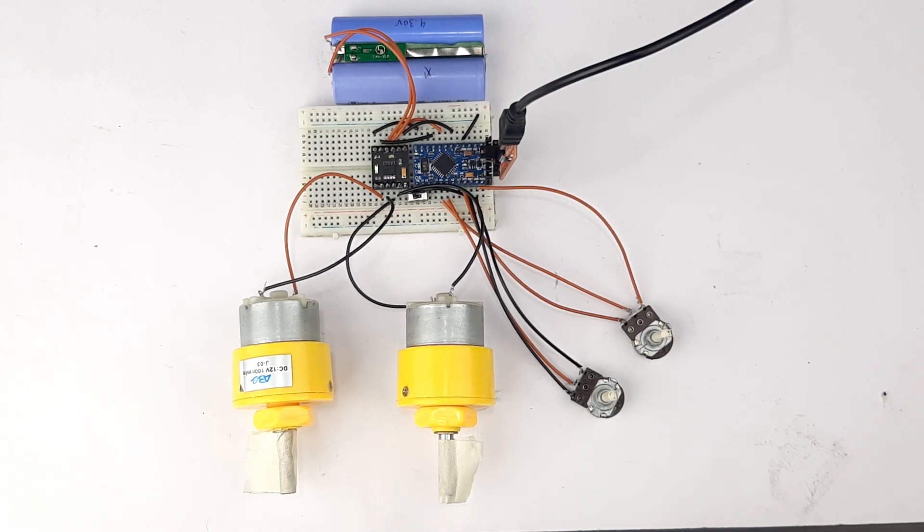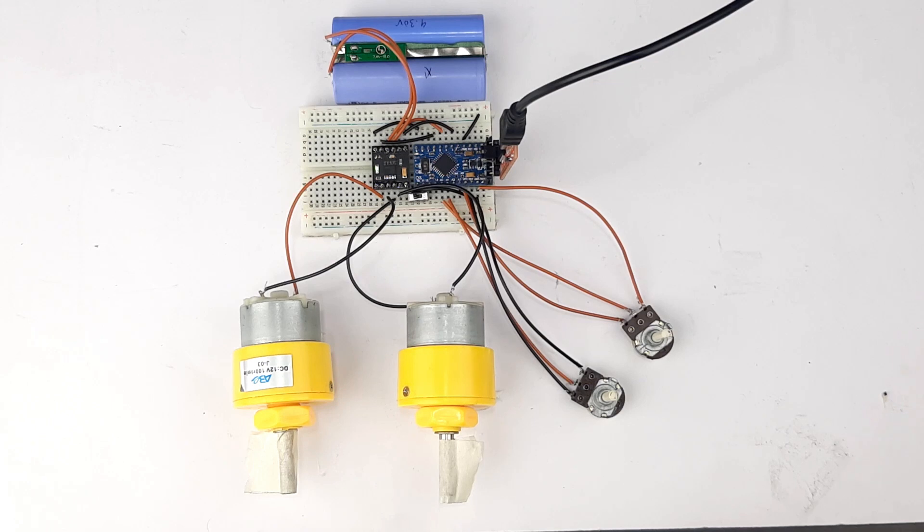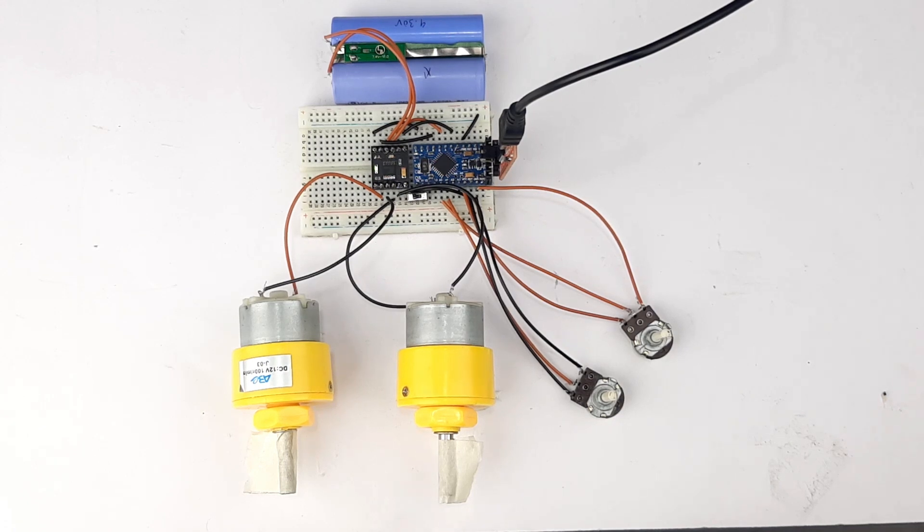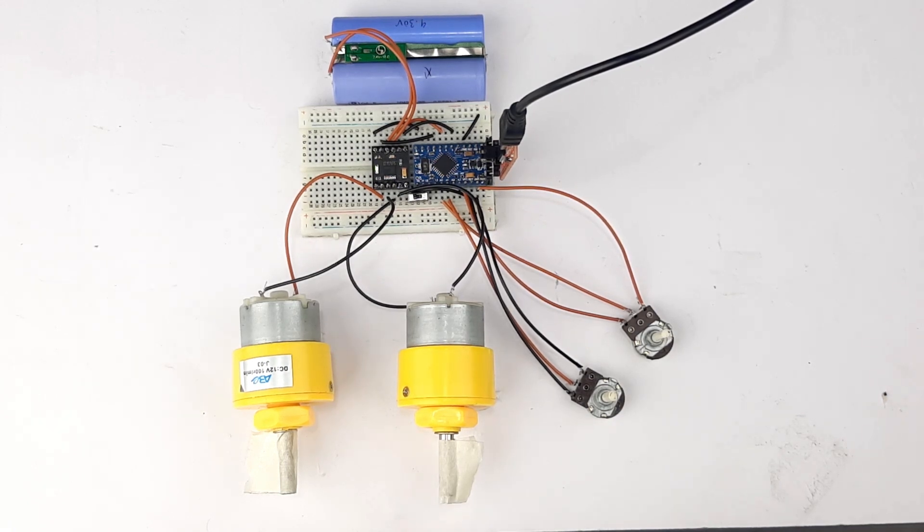So this DRV8833 module is very similar to the L293D module. The most interesting feature of this module is that you can control the speed of two motors differently, which you cannot do with the L293D motor driver IC, which is the most common IC used to drive motors.